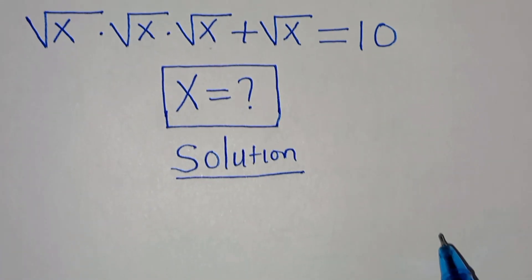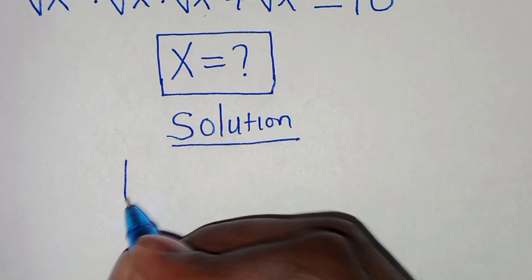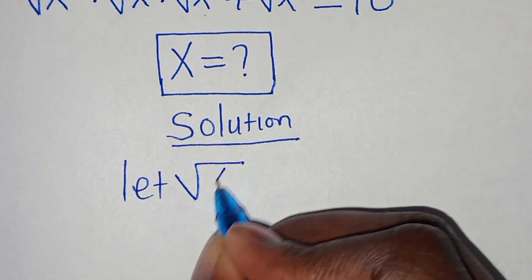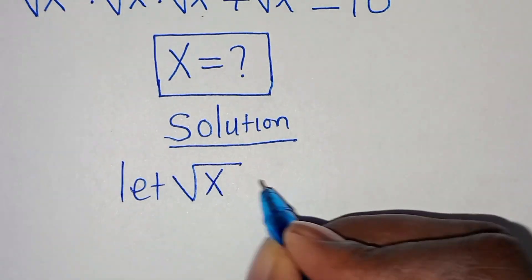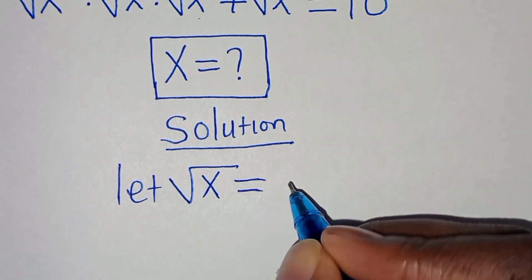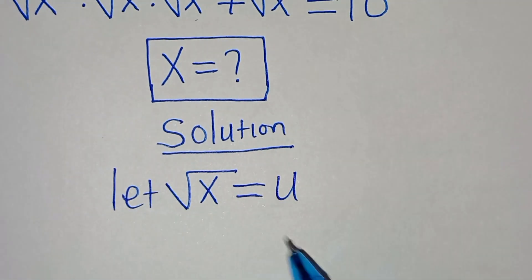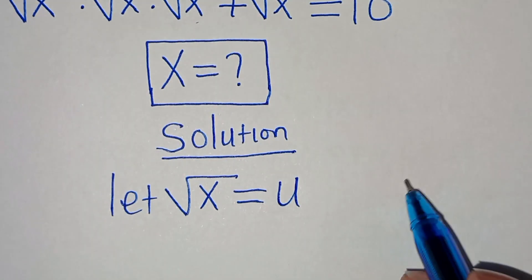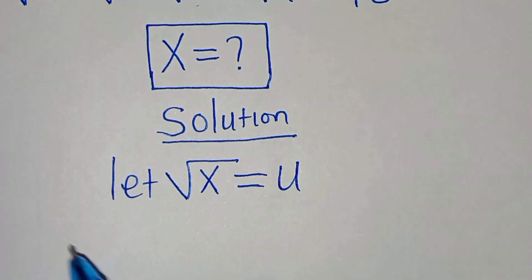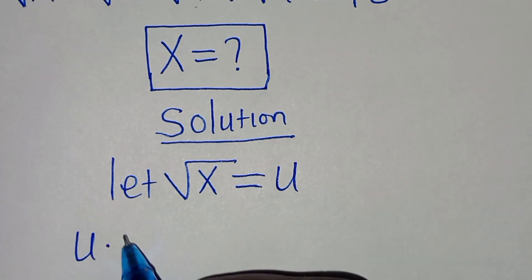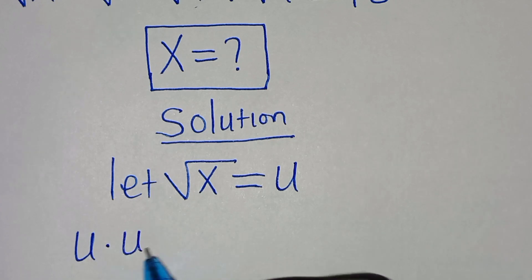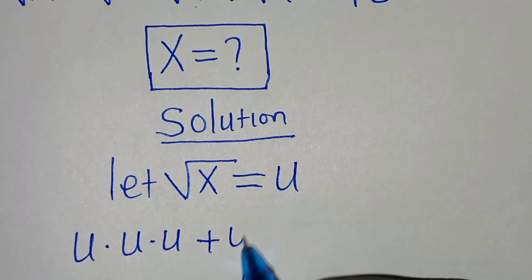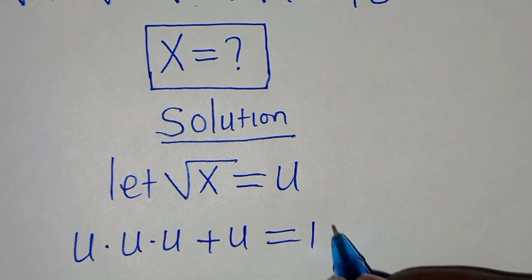The first step is to let the square root of x be equal to u. Substituting u back into the equation, we now have u times u times u plus u, and this is equal to 10.